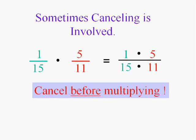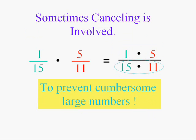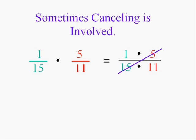You're allowed to cancel before you multiply. Now I'm looking at that fifteen and that five. I don't want to multiply those numbers. I'm gonna cancel, dividing both top and bottom by five. That'll make life way easier for me. And now one times one is one and three times eleven is thirty-three. It's not that bad.